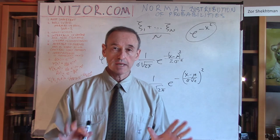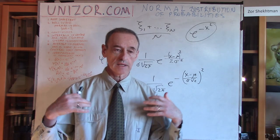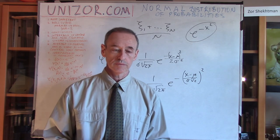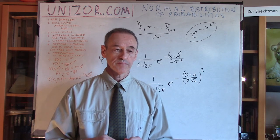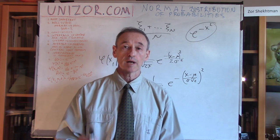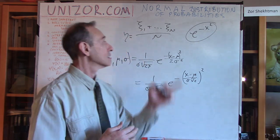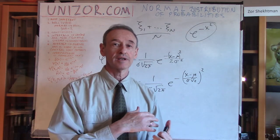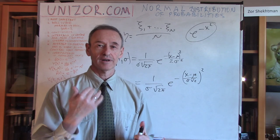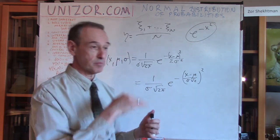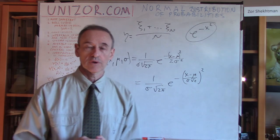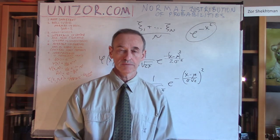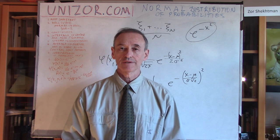That was basically it — an introduction to normal random variables. In the next lecture, I'll put a couple of examples showing that averaging does actually resemble more and more of a normal distribution, a bell curve, as the number of random variables participating in the averaging increases. Thanks very much, and good luck.